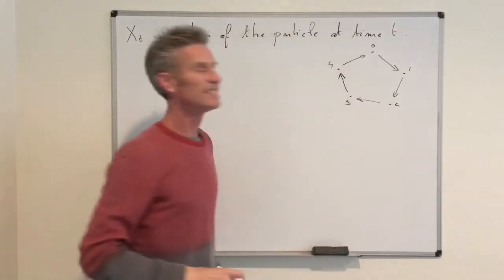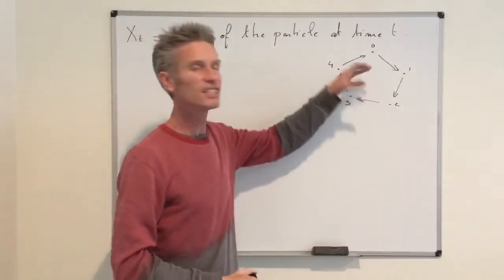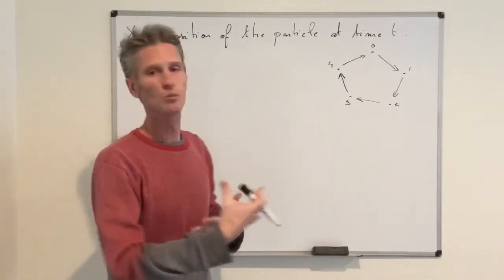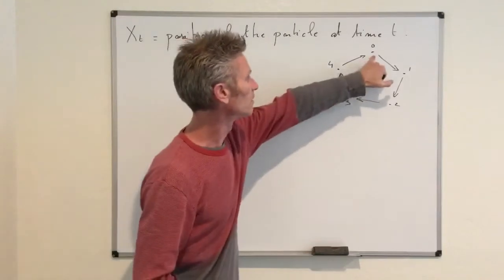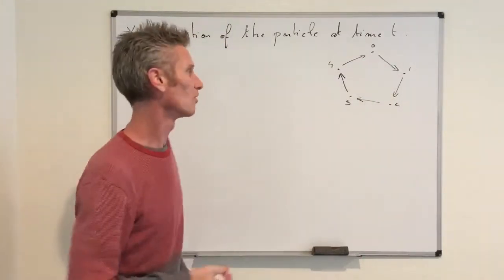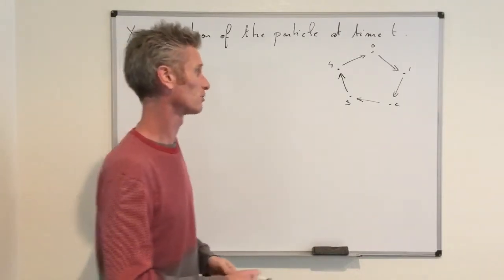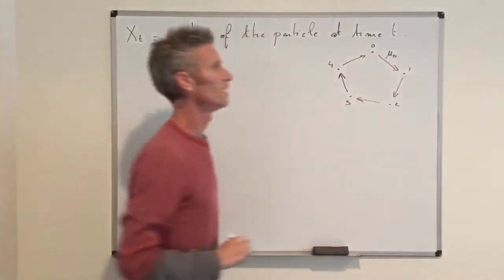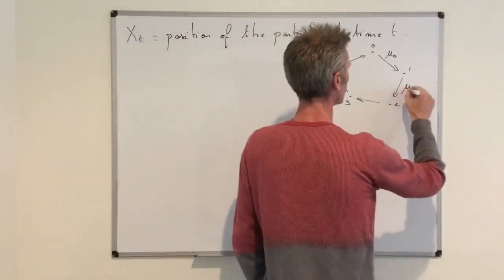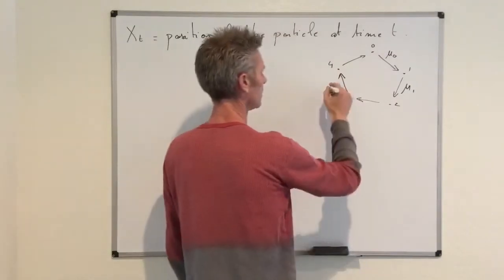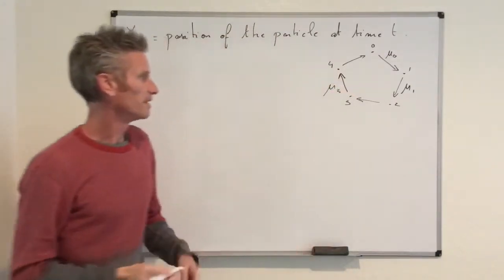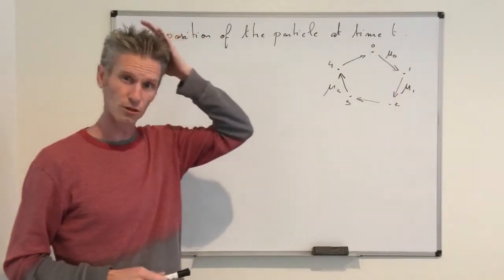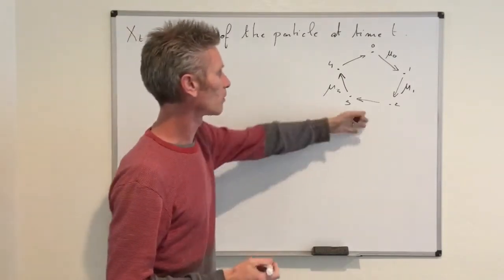The system does not evolve in discrete time but in continuous time, and the part of randomness in the process is that the time spent at each vertex is going to be random — more precisely, exponentially distributed. So we assume we go from 0 to 1 at rate μ_0, from 1 to 2 at rate μ_1, and so on, up to rate μ_3. This is the directed graph representation where the weights on the arrows show the rates.